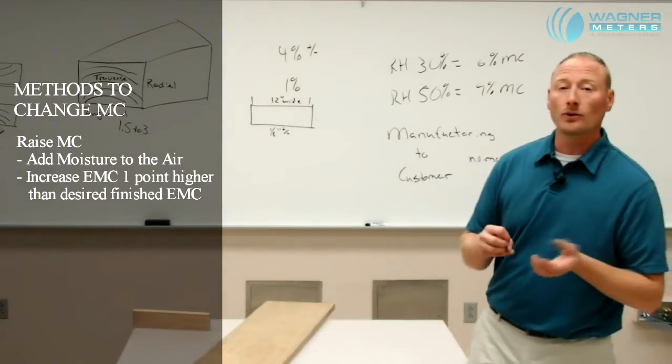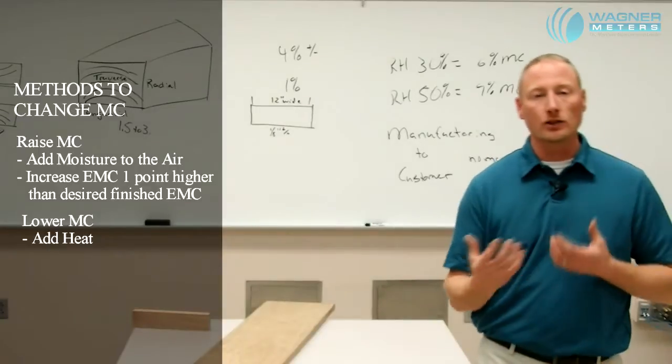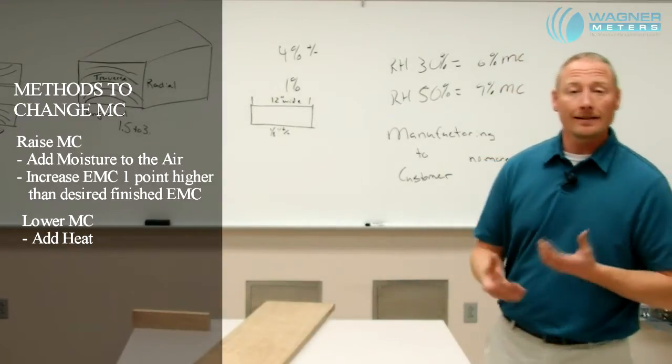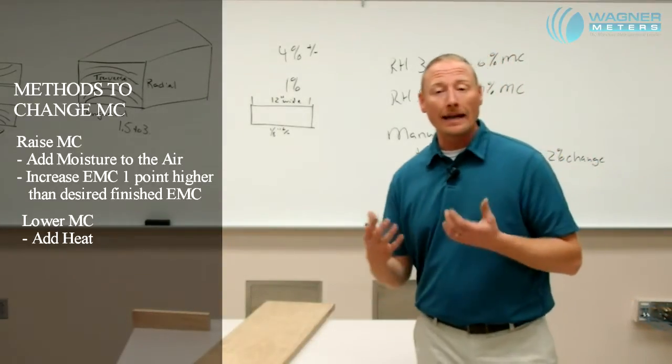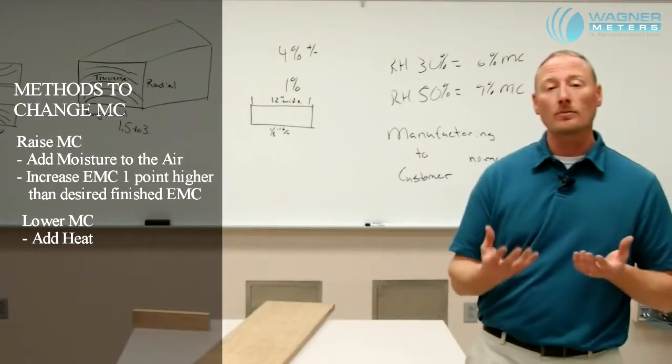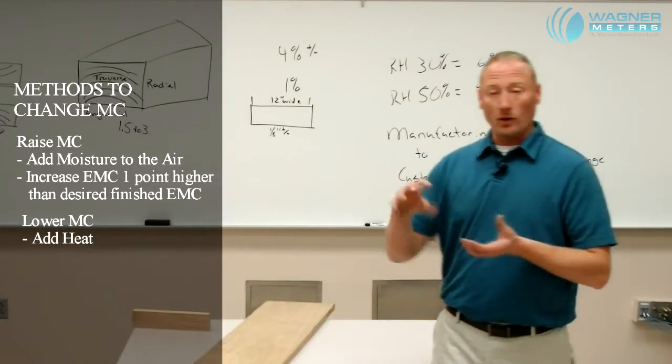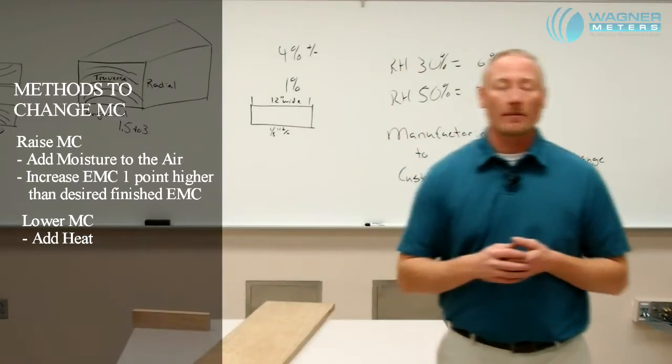Same thing goes for dropping the moisture content. Easiest way to change or lower the moisture content is to simply add heat. By adding heat, we are going to lower that relative humidity, therefore lowering the moisture content of that material.